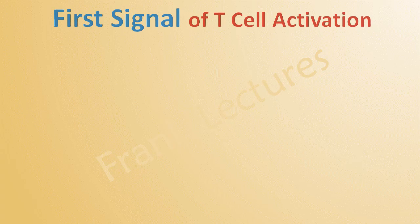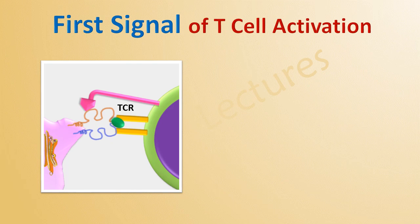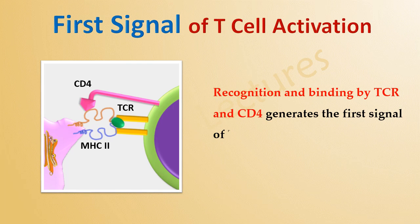For the first signal of T-cell activation, the TCR recognizes and binds the antigen, and the CD4 co-receptor binds the MHC-2 molecule. This recognition and binding by TCR and CD4 generates the first signal of T-cell activation.